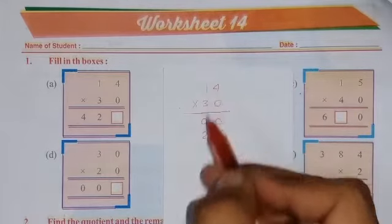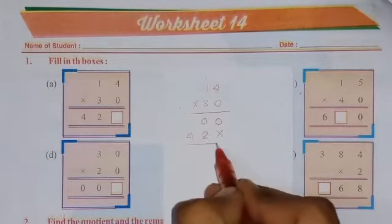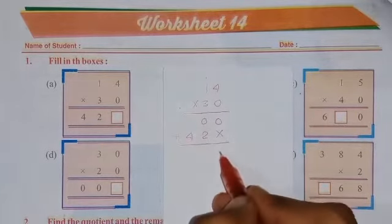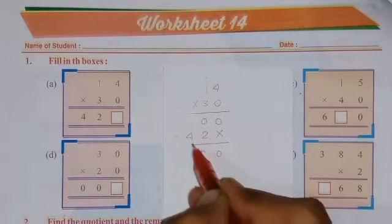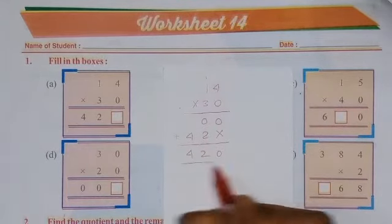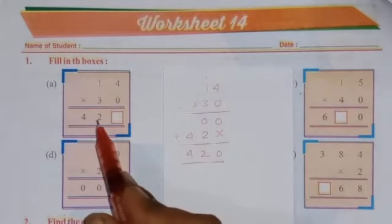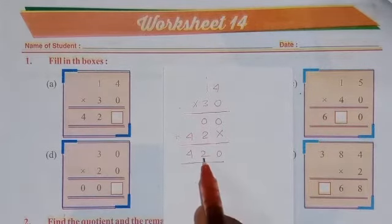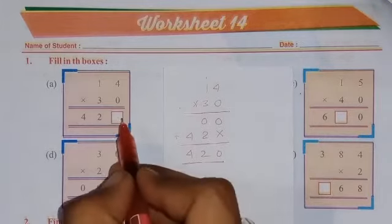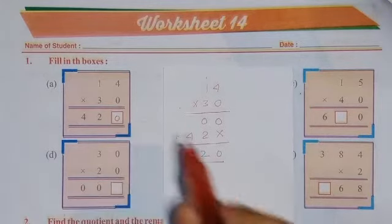Now 3 1's are 3, 3 plus 1 is 4. Now add these two numbers: 0, 2, and here is 4. Now match the answer with this answer: 4, 2, and blank. 4, 2, 0. It means here will be 0.